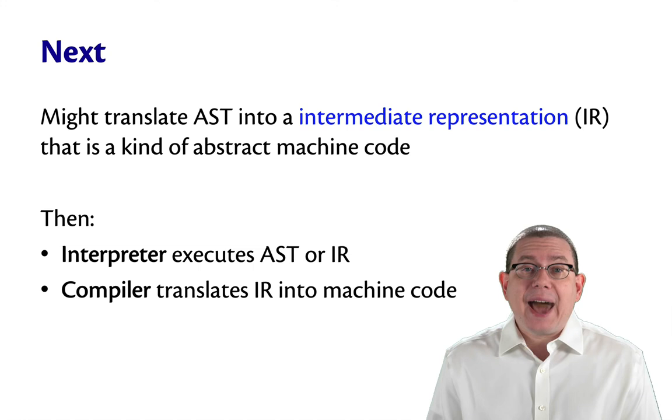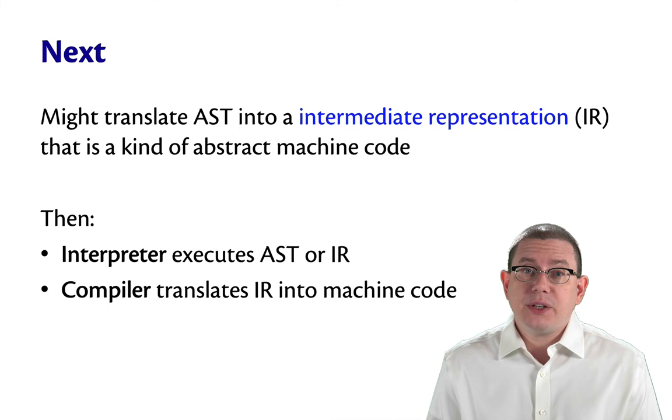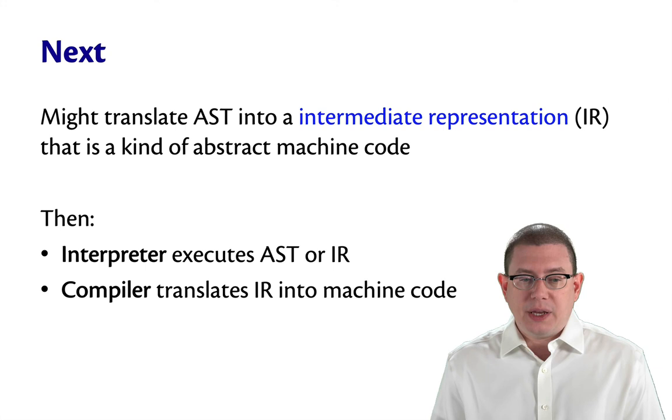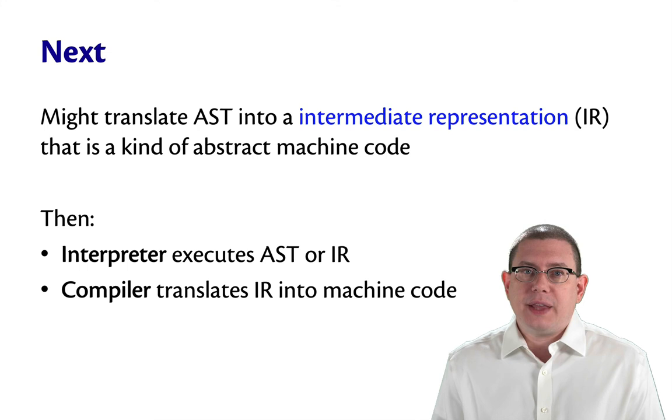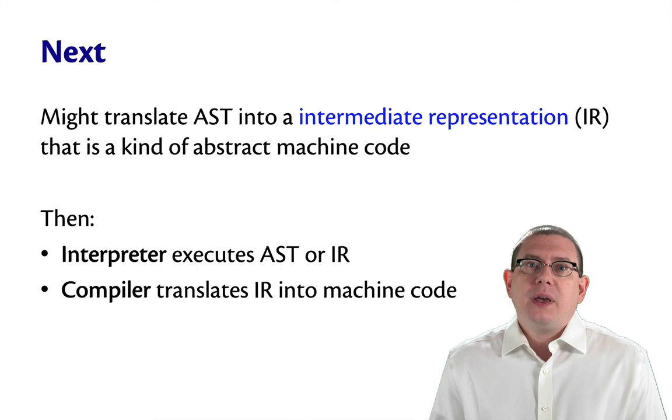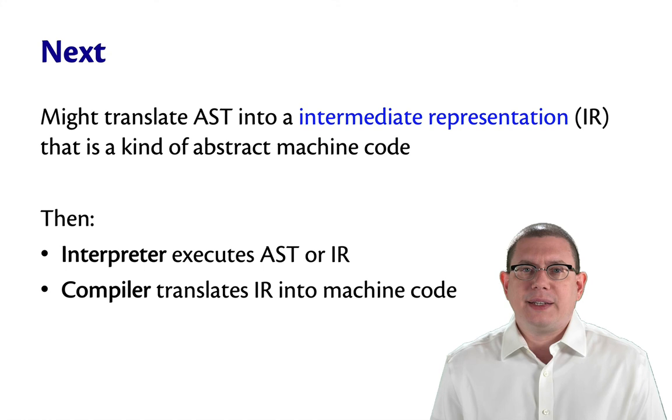What happens next kind of depends on whether we're looking at a compiler or an interpreter, and it depends on the language and the architecture as well. We might translate the AST into an intermediate representation. And then an interpreter could execute that IR, or maybe it'll just directly execute the AST. A compiler, though, is going to start translating that AST into more and more machine-like representations. For more of what that means, you'll need to take a computer architecture or systems programming class like CS3410. We're not going to go into that here.